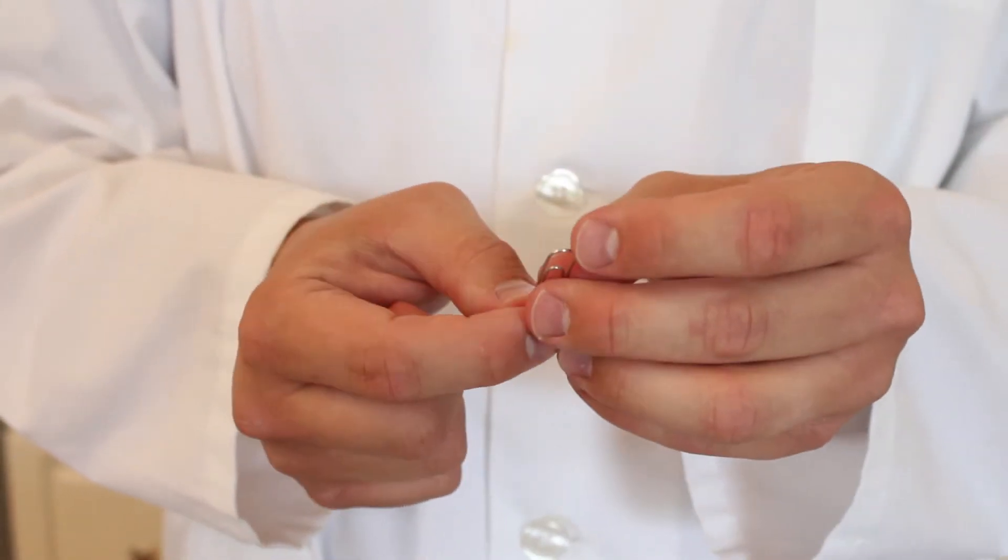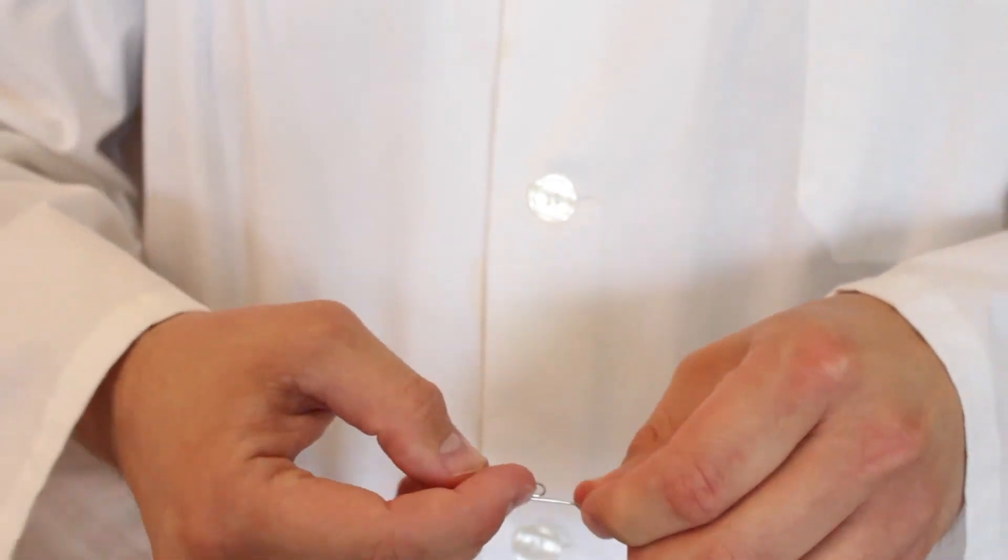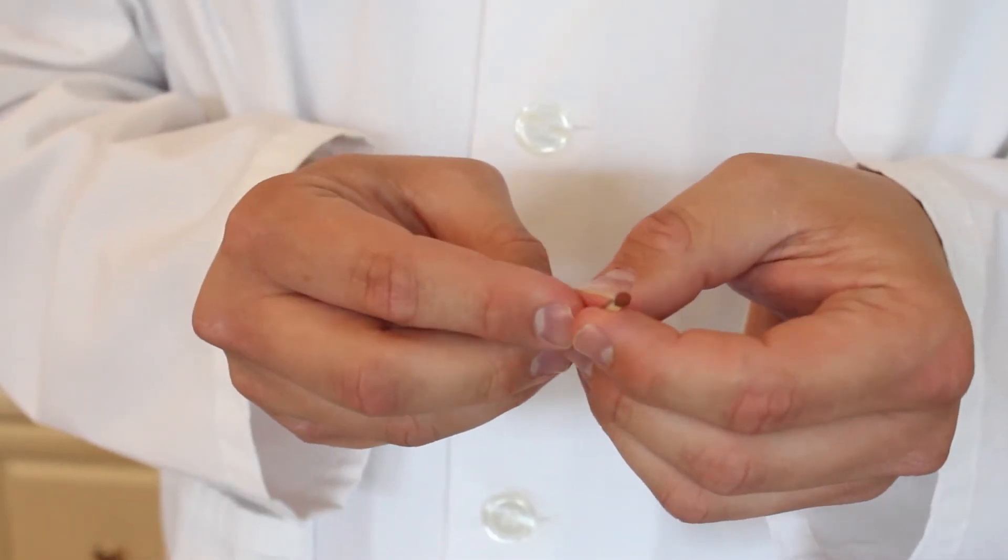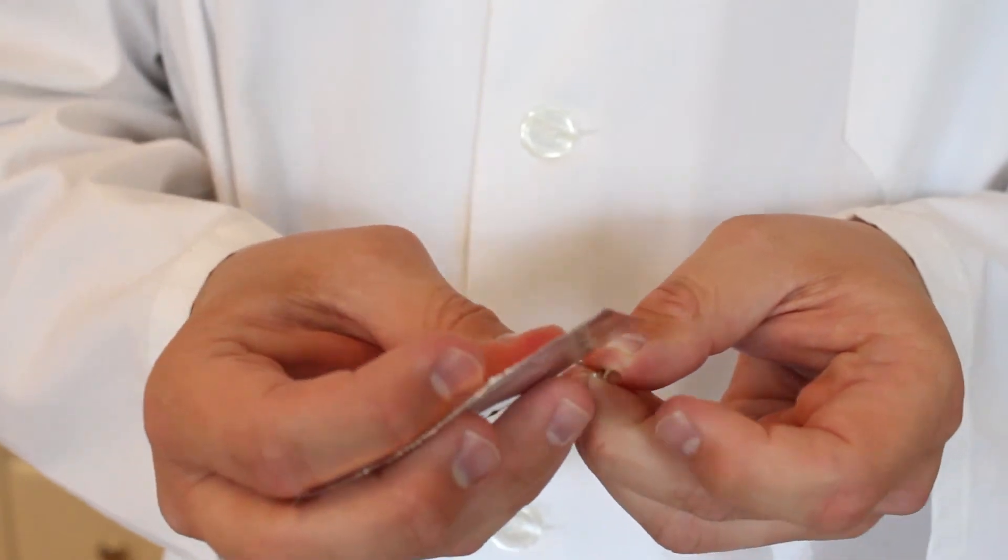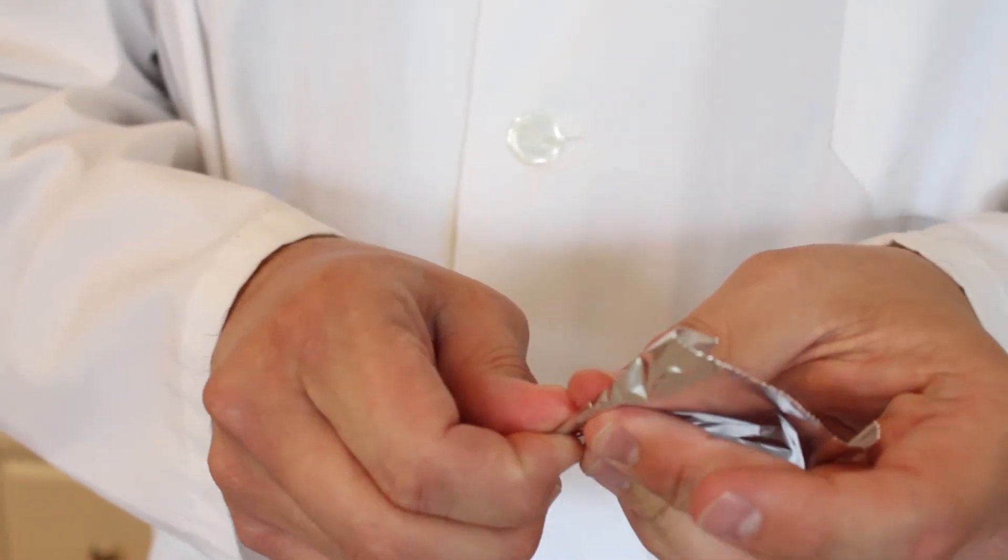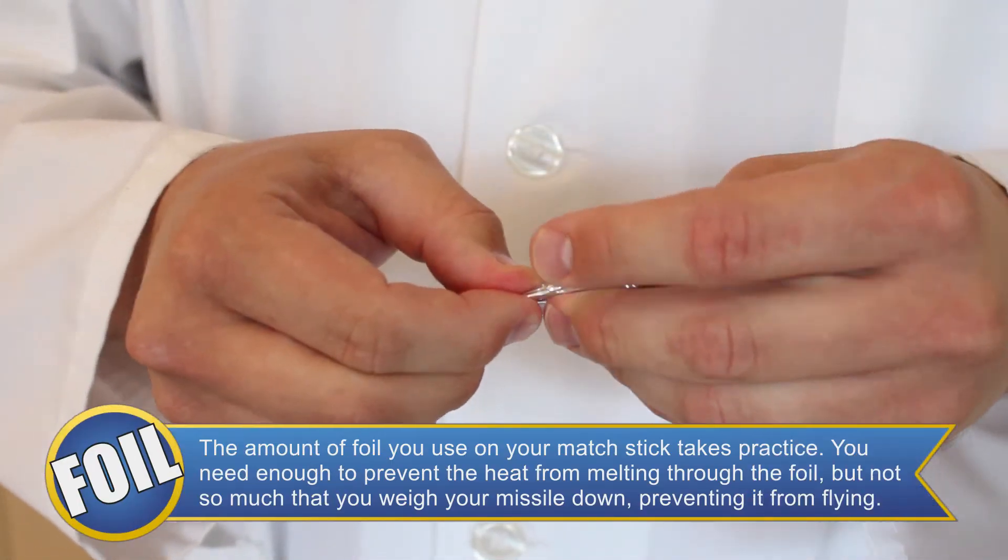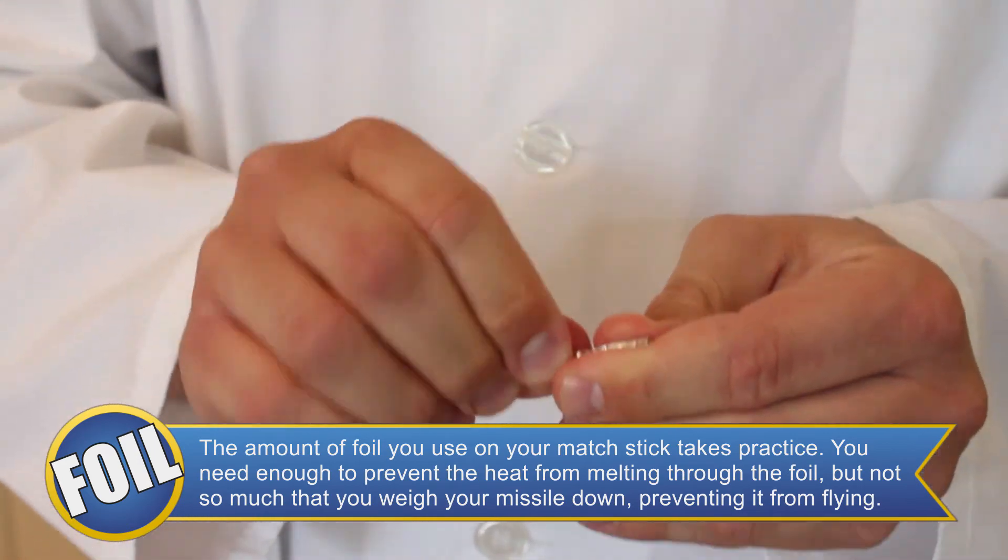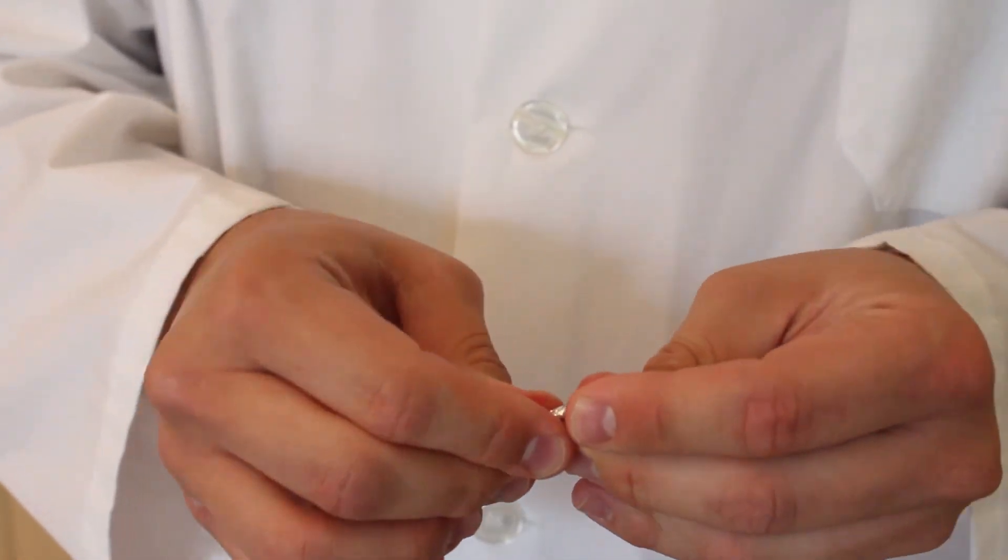The first step to making our missiles, we need to make a little exhaust port to let the energy from the chemical reaction out. For this, we've been using paperclips, so all you have to do is straighten one out. Now take the matchstick, line it up with the paperclip, and take the aluminum foil and wrap it as tightly as you can around the head of the match. Then pull the paperclip out and be sure not to crush down the little exhaust port we made for our missile.